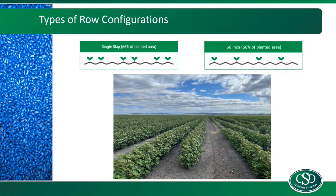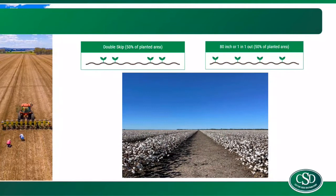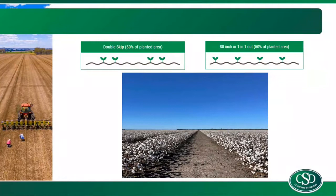You've got a metre either side of the cotton plant to allow for some root exploration zones. Moving into double skip, so 50% of the planted area, and similar with 80-inch, one in one out. Double skip provides a bit more risk assurance than single skip when seasons are less favourable than ideal. Again, you've got one and a half metres either side of the plant. This configuration is best suited to dry profiles in hotter environments, so the western reaches of the dryland growing area. In more favourable years, you can get some pretty vigorous vegetative growth and a little bit of lodging in double skip and 80-inch.